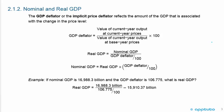The GDP deflator or the implicit price deflator reflects the amount of GDP that is associated with the change in the price level. Here we have the formula for the GDP deflator. In the numerator is the value of current year output at current year prices divided by the value of current year output at base year prices times 100.